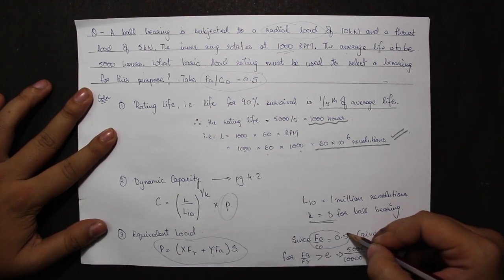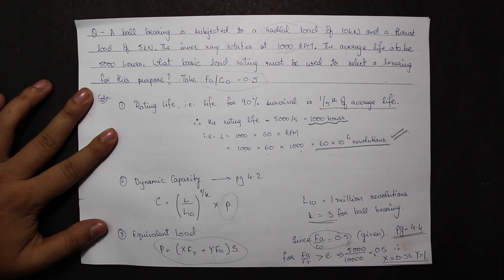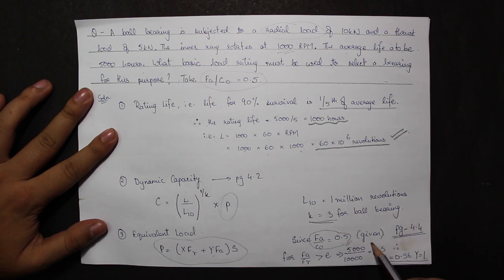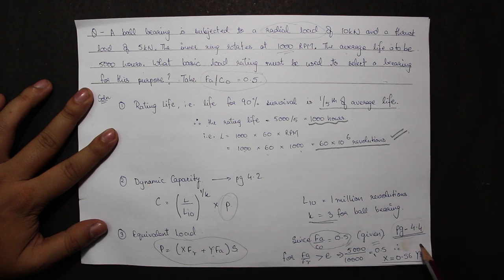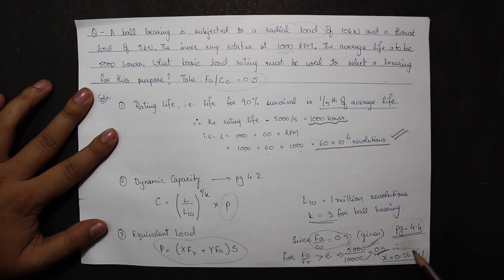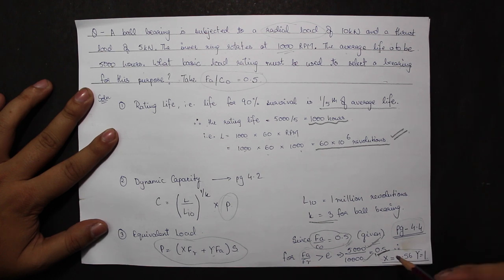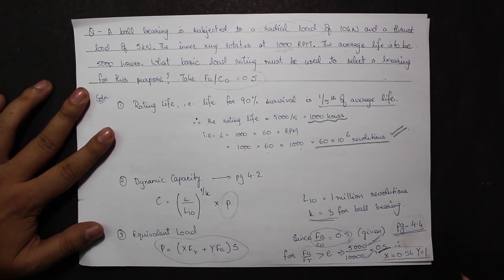So if I jump to page number 4.4, I have in the first row FA by C0 is equal to 0.5. Now I will be finding FA by FR or the thrust load divided by the radial load, which gives me 0.5. So checking 0.5 with the value of E that is in the last column, I get the ratio FA by FR is greater than E which was 0.44.